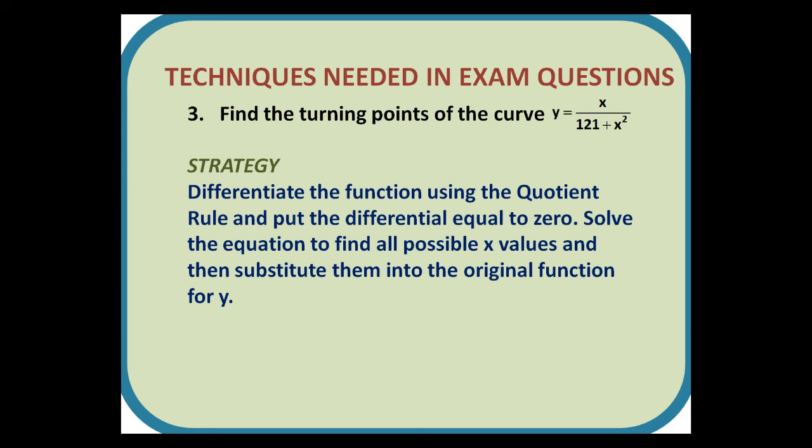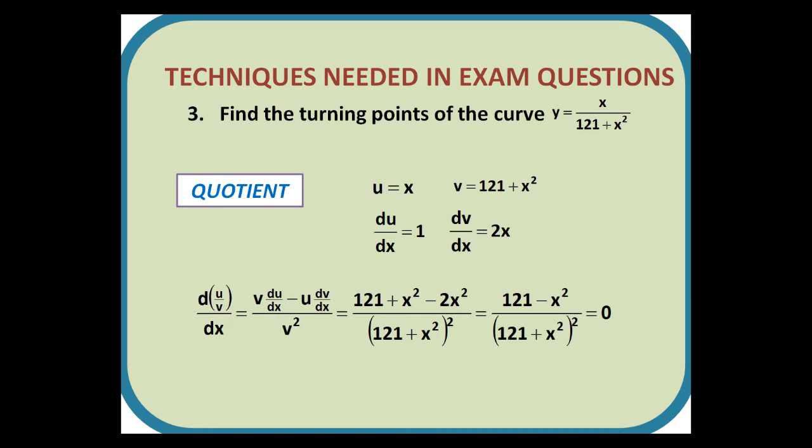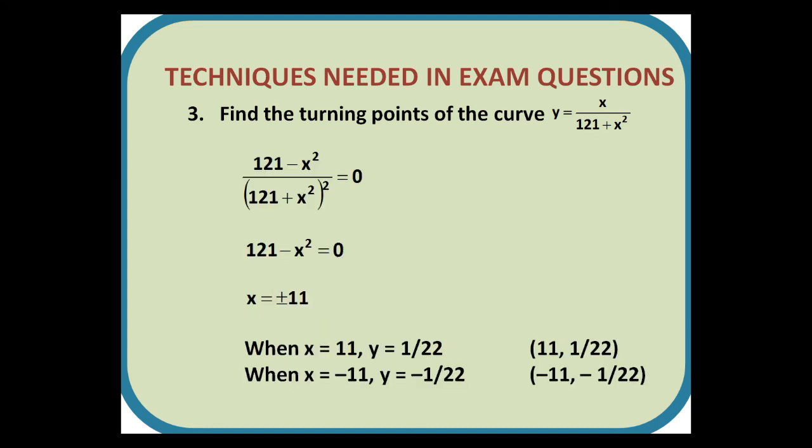Number 3. Find the turning points of the curve y equals x over 121 plus x squared. Strategy: Differentiate the function using the quotient rule, and put the differential equal to 0. Solve the equation to find all possible x values, and then substitute them into the original function for y. The quotient rule gives us 121 minus x squared over the square of 121 plus x squared, as shown. And because we are looking for turning points, we put it equal to 0. If we then multiply by the denominator, it gets multiplied by the 0, and leaves us with 121 minus x squared is 0, which of course gives us x is plus or minus 11. Substitute back into the original curve to find y. So 11 divided by 121 plus 11 squared, which is also 121, is 11 over 242, which cancels down to 1 over 22. Minus 11 squared is also 121, so the only difference is that the fraction is negative.